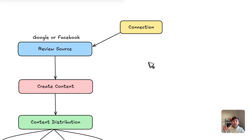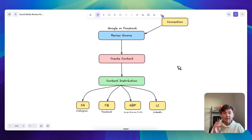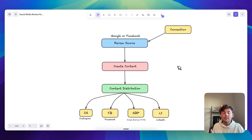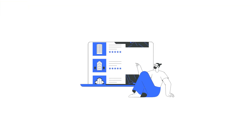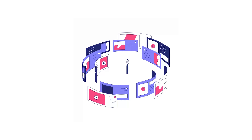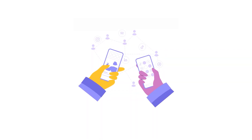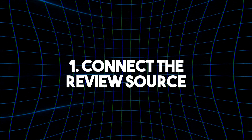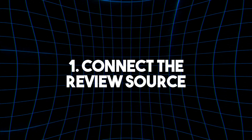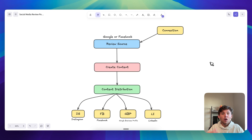This flowchart explains exactly how this works. If you follow along today, I'll show you exactly how to set this up in High Level so that every time your clients get a Google review or a Facebook review, you can automatically turn that review into content and post it across all their social media platforms without lifting a finger. So step one is we need to connect the review source — where are we pulling these reviews from?